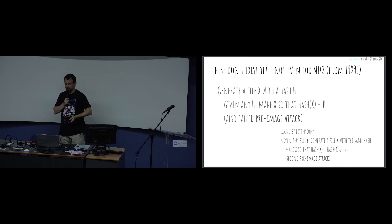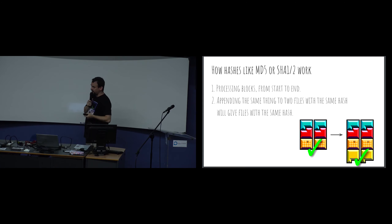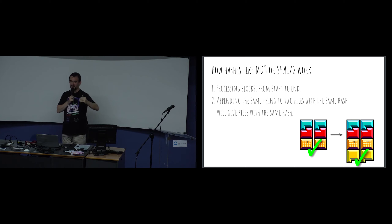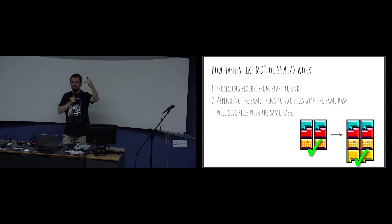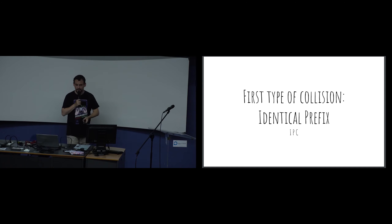An important property we use to abuse MD5 and SHA-1 is that it processes content by block from start to end. If at some point the hash is the same at the end of a block, adding the same content on both sides keeps the hash the same. So after a hash collision computation, if you append something else the hash still remains the same. That's a very important property we can abuse.